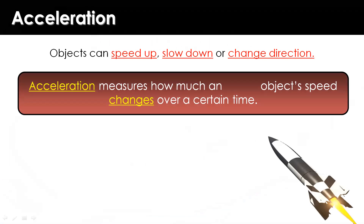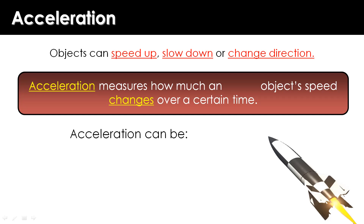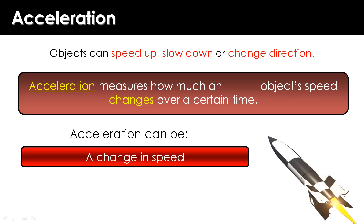Acceleration is a vector — we call it speed with direction. That means acceleration has two conditions. One condition is a change in speed, for example, a change from 1 meter per second to a higher value.